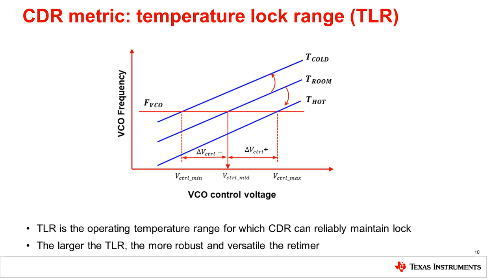Temperature lock range, or TLR, is the operating temperature range for which the CDR can reliably maintain lock. TLR testing verifies the worst-case temperature delta that can be withstood by the CDR while maintaining lock. A large TLR is a signature of a more robust and versatile retimer. The CDR VCO frequency has a linear relationship with control voltage. As the operating temperature changes, the VCO plot will shift upwards if cooled down or downwards when heated up. The CDR has an allowable range for its VCO control voltage, from V control min to V control max. An optimal CDR has a control voltage window that allows its VCO frequency to remain locked to the input data during normal operation, and the CDR will keep the VCO frequency locked even if the temperature ranges from one extreme to the other.